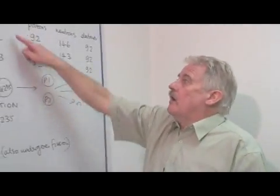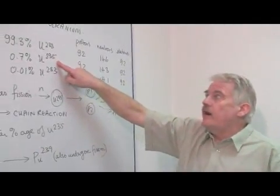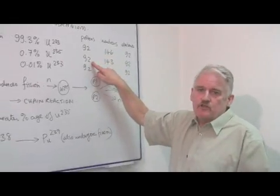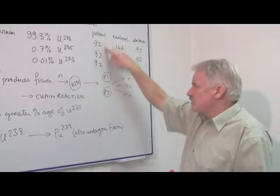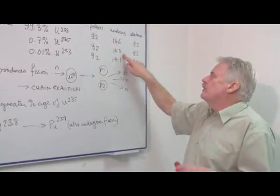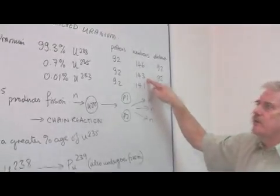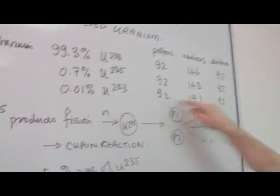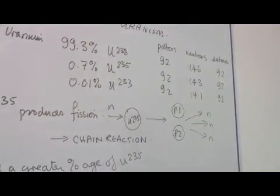So uranium-235 is slightly different. It still contains the 92 protons, of course - that's what tells us it's uranium. But only 143 neutrons. And uranium-233 with 141 neutrons.